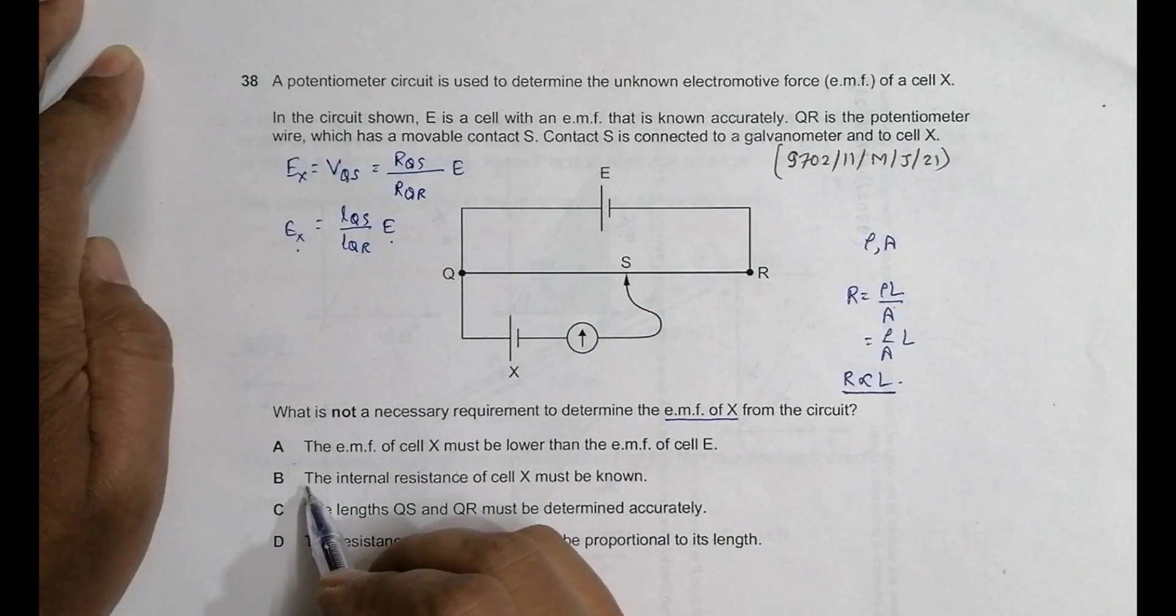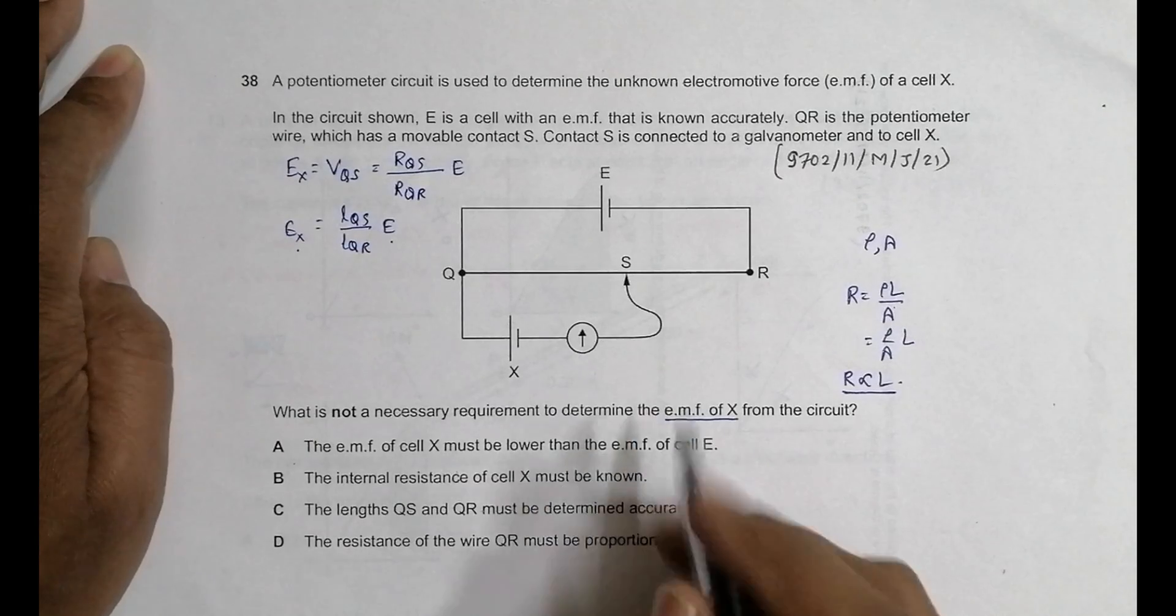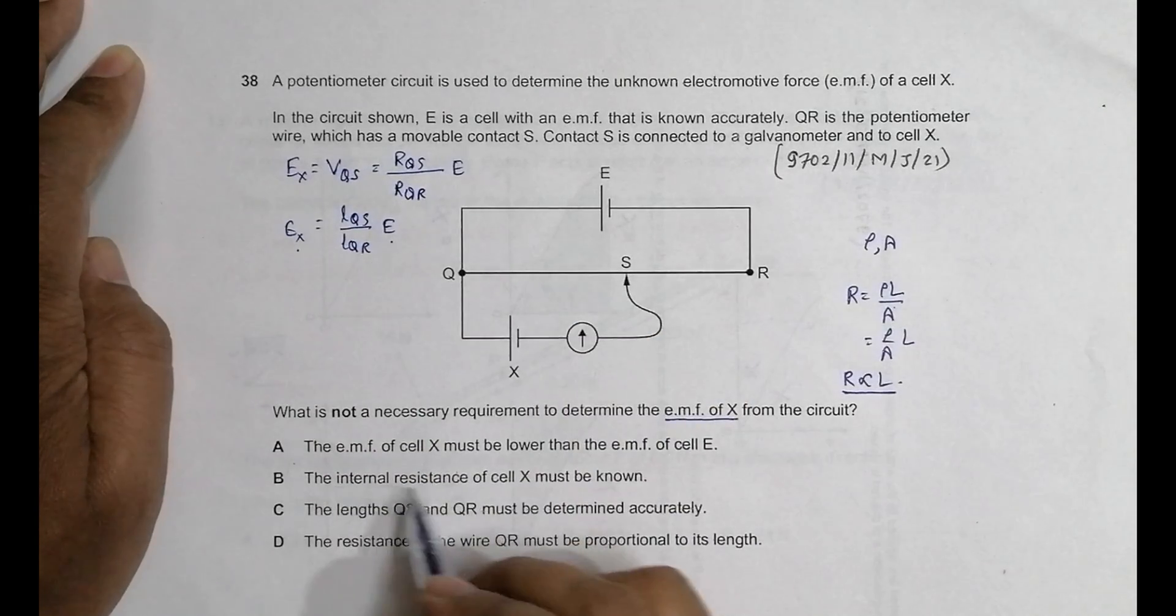Now why I am doing choice number B at the last is because it's the answer. The inner resistance of cell X must be known. It says that for this to be determined, the inner resistance of cell X must be known. It's not true.